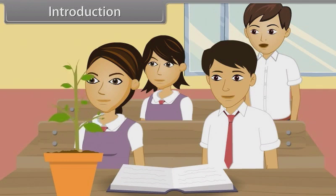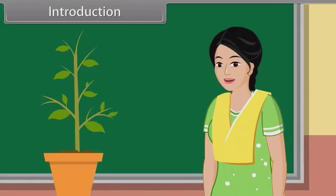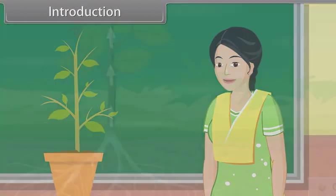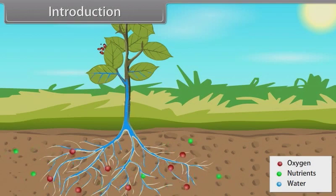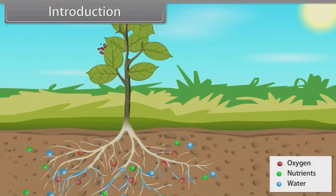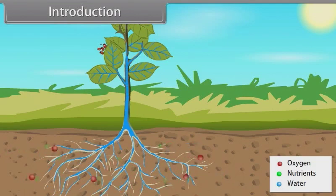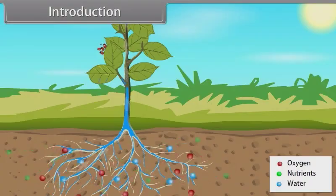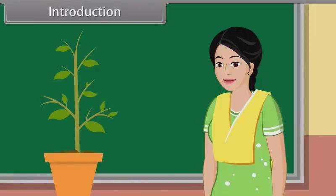Ma'am, can we measure the growth of plants? Good question, Rahul. Yes, we can. The growth of a plant can be measured by considering various factors such as nutrient availability, water availability, oxygen, etc. One more thing I would like to tell you that there are five plant growth regulators. They are auxins, gibberellins, cytokinins, ethylene, and abscisic acid. Okay, now it's time to learn about plant growth and development.